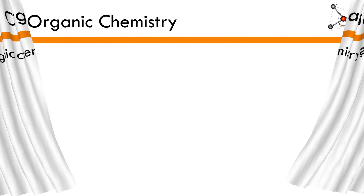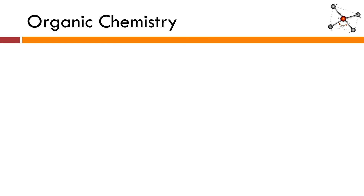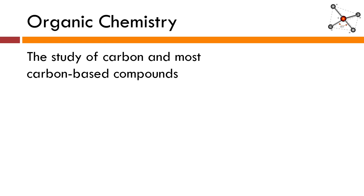Organic chemistry really focuses around the study of one single element — that element is carbon. So we're going to be looking exclusively at carbon-based compounds. Not every single element that contains carbon is considered organic. For example, we've seen carbon dioxide and carbon monoxide earlier this semester; we really don't consider those organic compounds. If you end up with an ionic compound that has carbon in it, for example something like sodium carbonate, we don't really count that as organic either. But there are tons and tons of molecules that are classified as organic, and we'll talk more about them during this lesson.